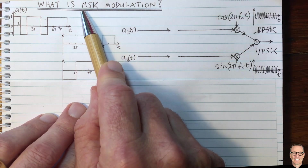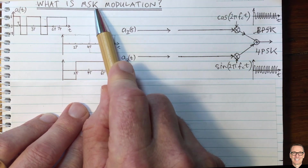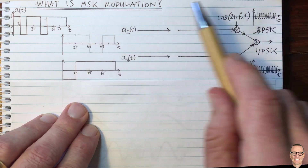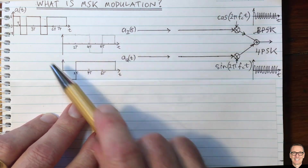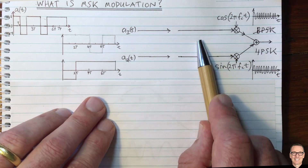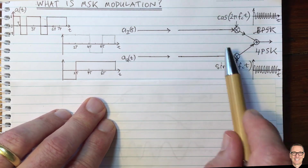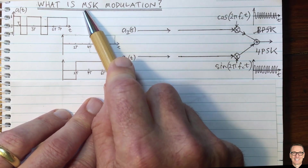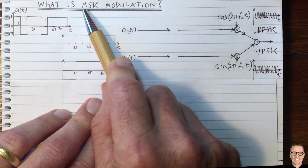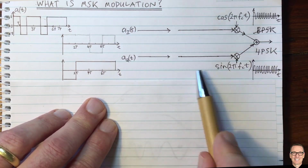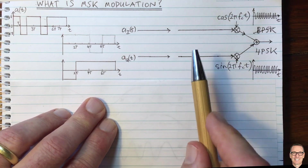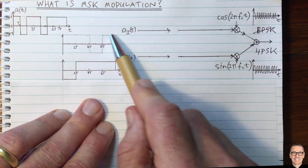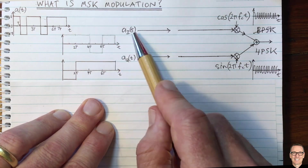So what is MSK — minimum shift keying? Let's try to understand it by thinking about building an extra component into this modulation format. In MSK it's exactly the same as 4PSK except for two differences: there's an extra multiplier, and we do something different with the data stream on the in-phase.